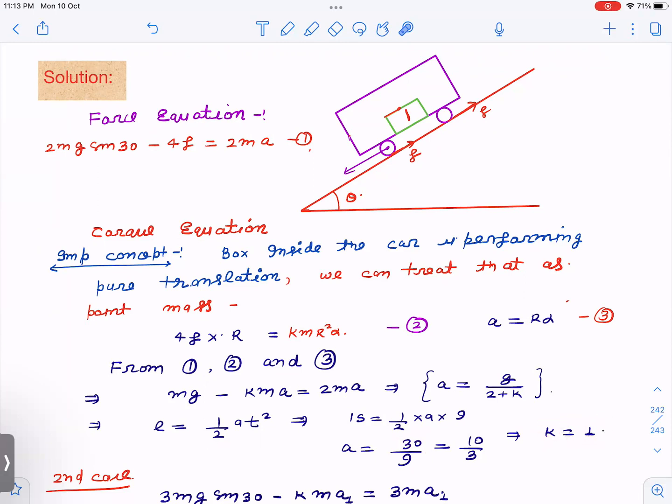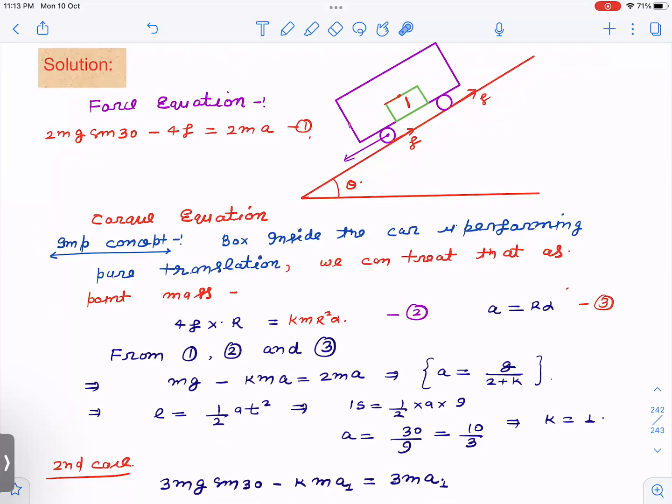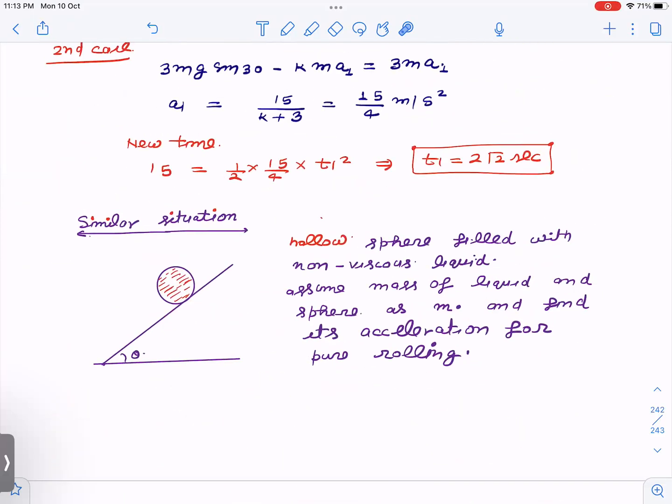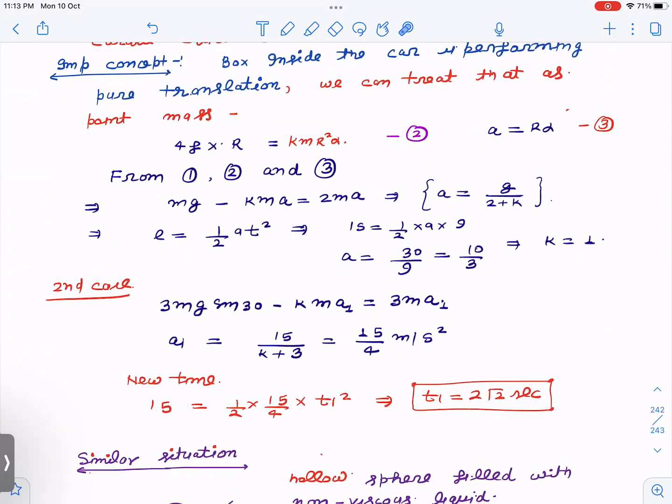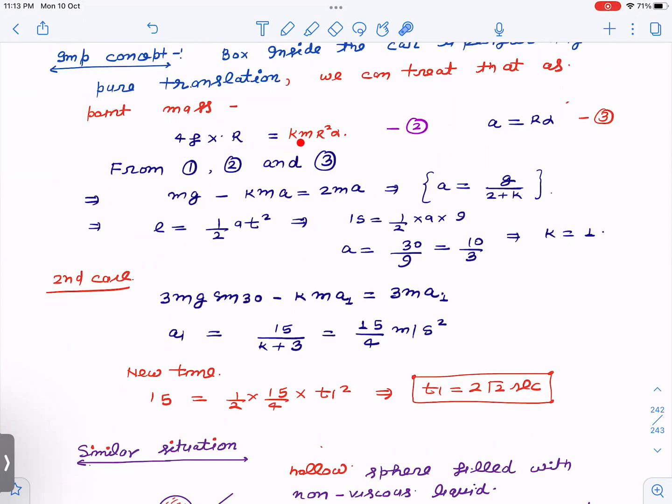Now it's simple. The question says that there is additional load m placed inside which does not slide inside the cart. So that will also behave as a dead weight - it will not rotate. So in the second case, just that mass will become 3m. But if you see, this torque equation is not going to change.